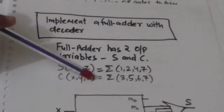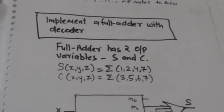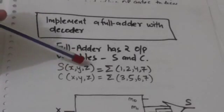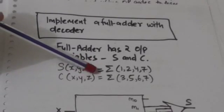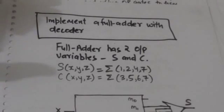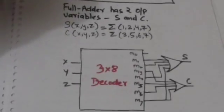There are three binary variables involved in the boolean function, so we can generate all possible minterms that can be formed by these binary variables by using a decoder. When these minterms are generated, we can form the sum of the required minterms by using an OR gate.